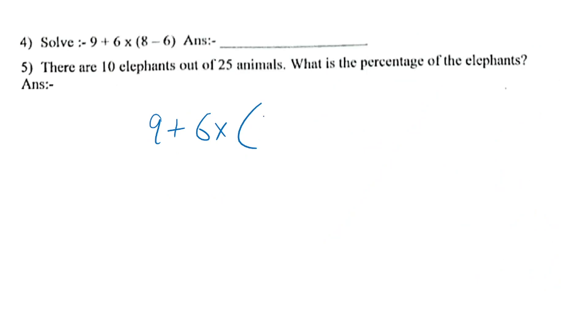Next question: Solve 9 plus 6 times (8 minus 6). Solve the bracket first: 8 minus 6 equals 2. Then 6 times 2 equals 12. And 9 plus 12 equals 21. So 21 is the correct answer.